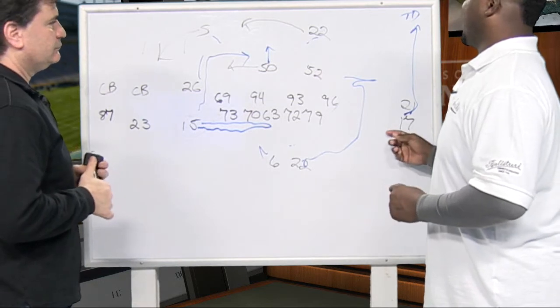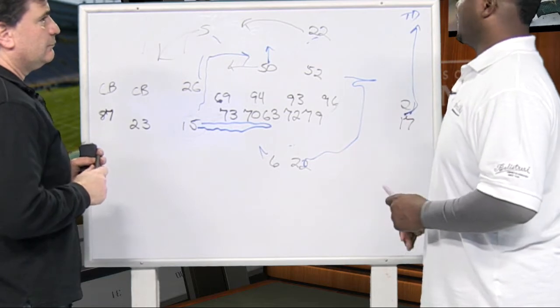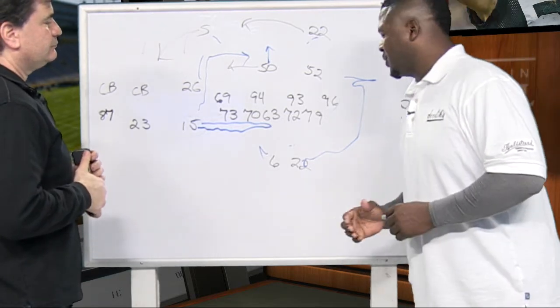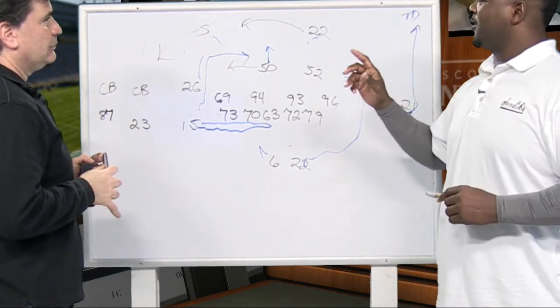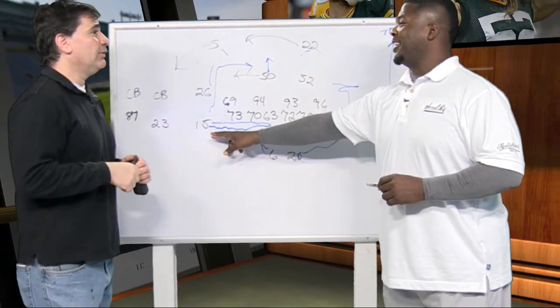But again, if this is Sam Shields, you don't worry about the speed, just the height difference. Jay Cutler's seen a lot of these coverages, but you can't confuse him like they did the first time. Roll the coverage, double, take away, because he's going to throw it to Brandon Marshall regardless. He is going to throw it. If you go back and look at the last X and O's, you saw he had three guys on Marshall and threw the ball.